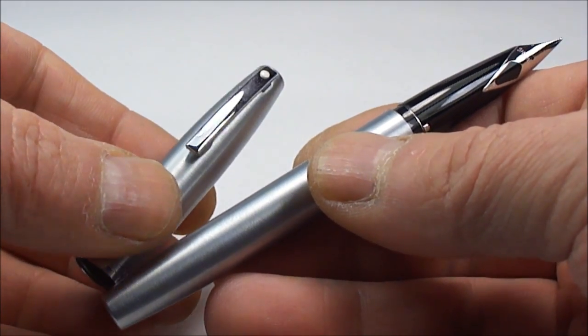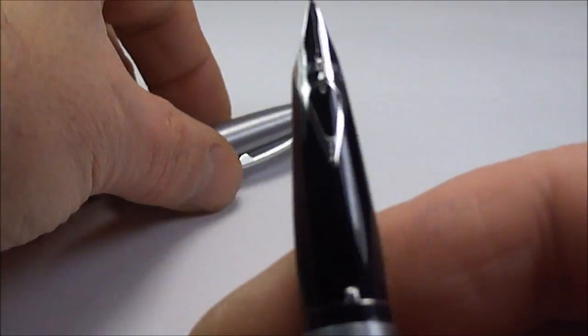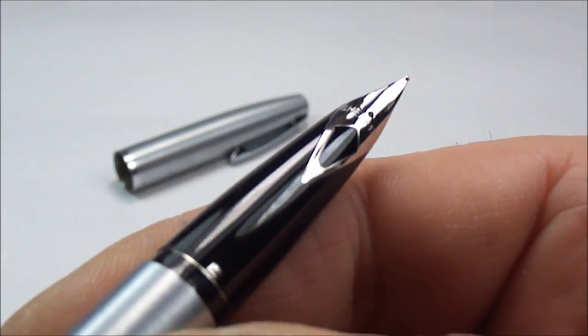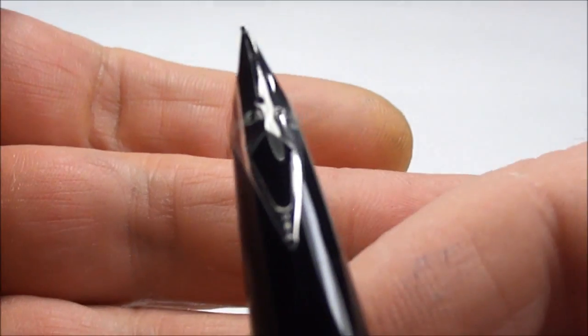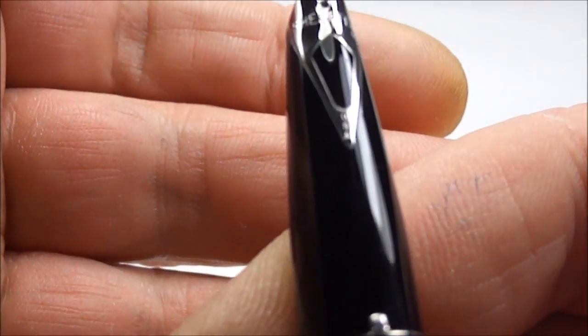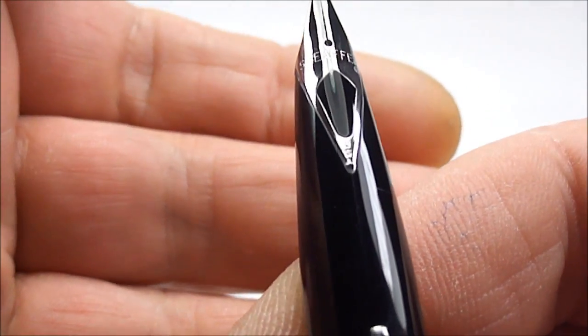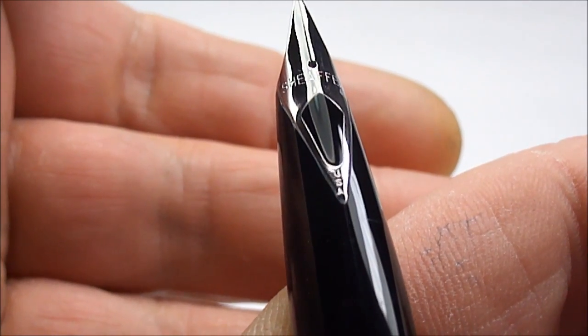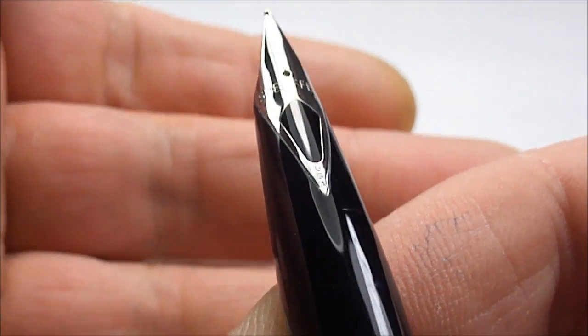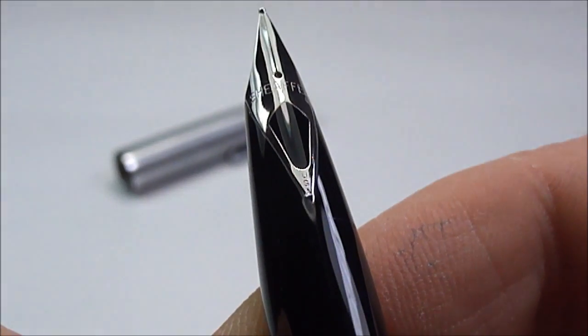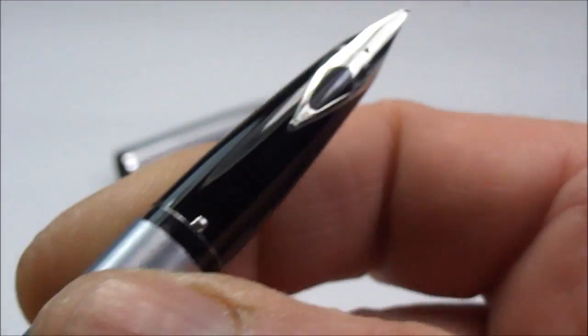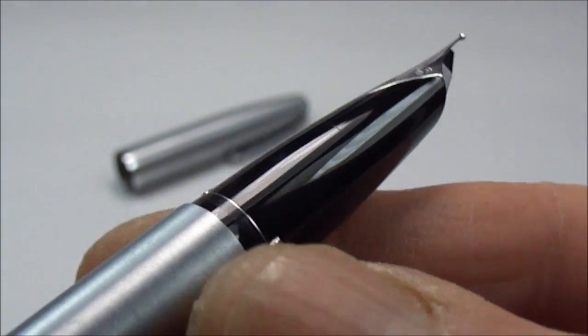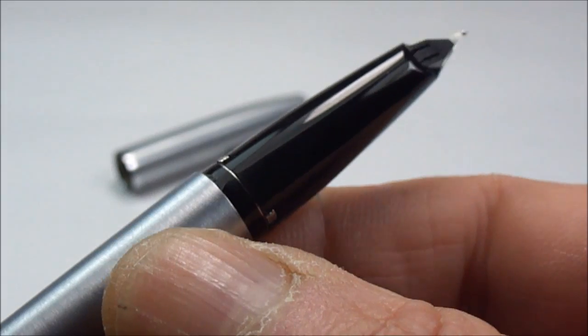In brushed chrome, it comes with this gorgeous inlaid stainless steel nib, which I'm hoping you can see there. It tells us to the top it says Sheaffer, and then right down to the bottom of the diamond, if you like, you can see it tells us it's USA.